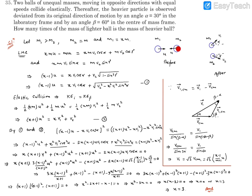Before the collision, m1 is moving with speed u and m2 is moving in the opposite direction with speed u. After the collision, m1 is deviated by angle alpha (given as 30 degrees from the horizontal direction), and v2 moves in another direction at angle gamma. Applying linear momentum conservation along the x-direction: m1*u − m2*u = m1*v1*cos(alpha) + m2*v2*cos(gamma).